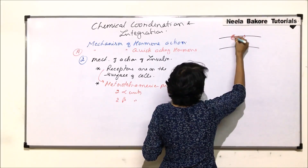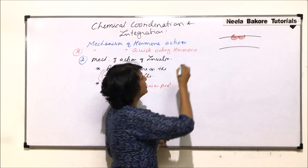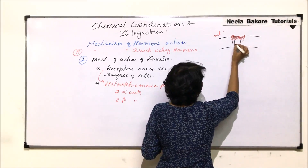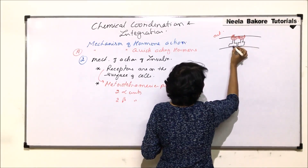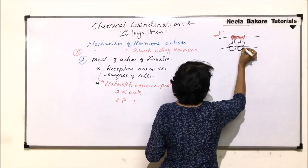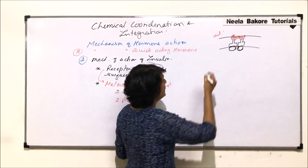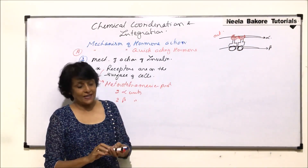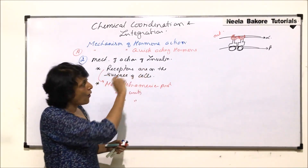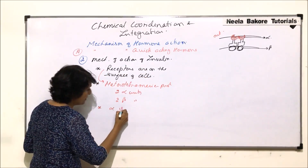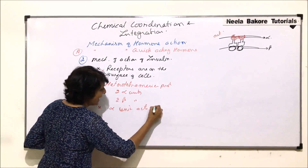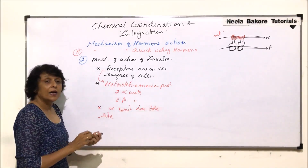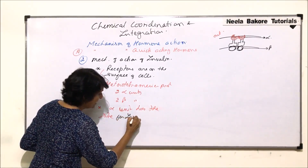The alpha units are exposed on the outer side of the plasma membrane and have the receptor site for insulin. The beta units are on the inner, cytoplasmic side of the membrane. So there are two alpha units and two beta units. The alpha subunit has the binding site for insulin.